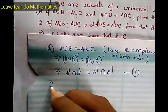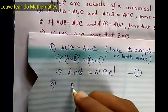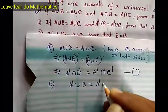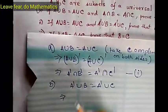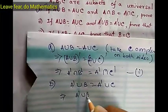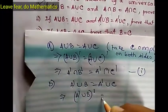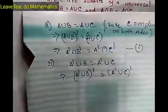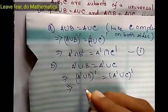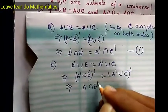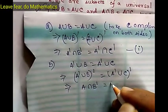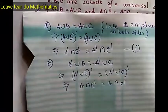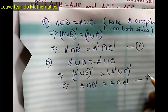Another condition given is A complement union B equals A complement union C. Take complement on both sides, then apply De Morgan's law: we get A intersection B complement equals A intersection C complement. This is our relation 2.